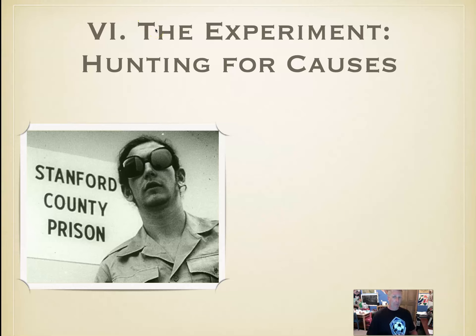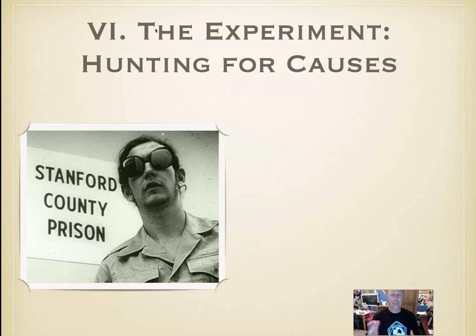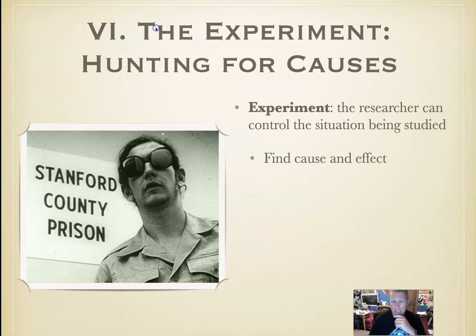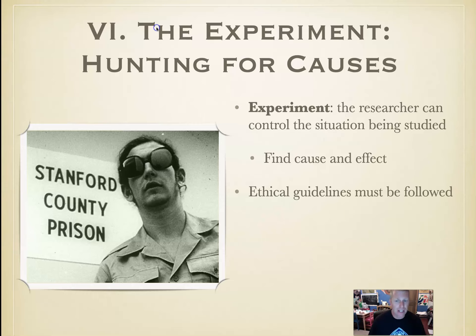If you really want to test something and get empirical data about whether something has a cause and effect relationship, you use an experiment where the researcher can control the situation being studied. If they can eliminate all variables except for an independent and dependent variable, they can find a cause and effect.